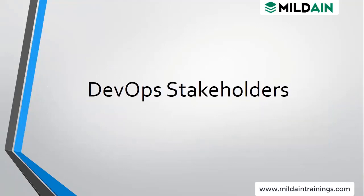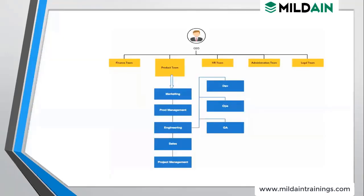Now we have DevOps stakeholders. We cannot say it is only a development and ops thing, because DevOps is a process first and automation second. Whenever in any organization we are going to implement DevOps, we need a green signal from management. The main stakeholders include the product team, marketing, product management, engineering, sales, and project management — all are involved. Then it moves to DevOps, ops, and QA.